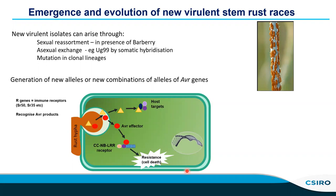So what are avirulence genes? In wheat rust we have a gene-for-gene resistance mechanism where there are resistance genes in the host which encode immune receptors, and they recognize the products of avirulence genes from the pathogen that are delivered into the host during infection. The outcome of that recognition is to trigger a defense response and often cell death, which leads to resistance.